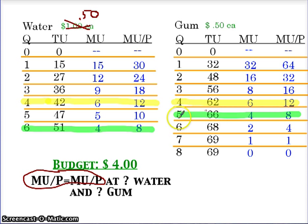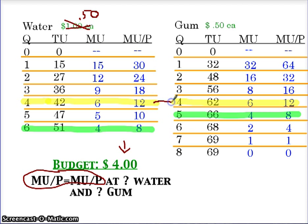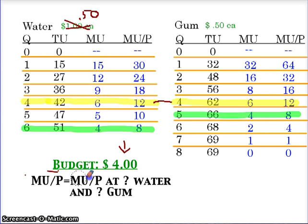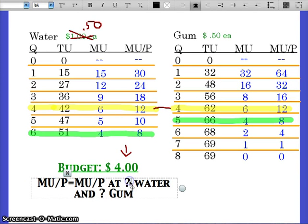Now we need to make sure that we have a combination that fits in our $4 budget. 4 water at 50 cents is $2. 4 gum at 50 cents is $2. $2 plus $2 is $4 — that fits. 6 water and 5 gum — I can't afford it, that's more than $4. So that's not a combination we want to use. Mu over p equals mu over p at 4 water and 4 gum.